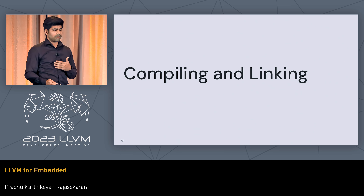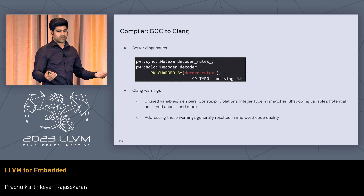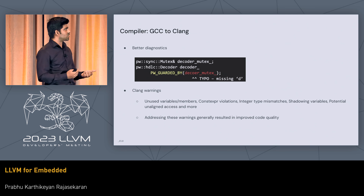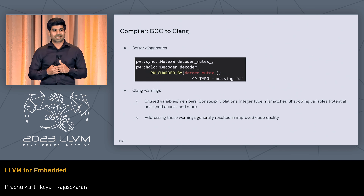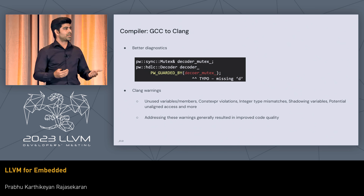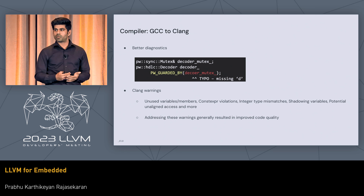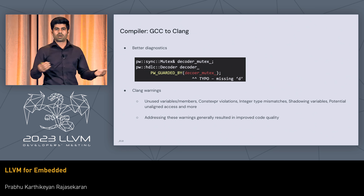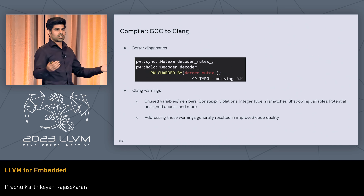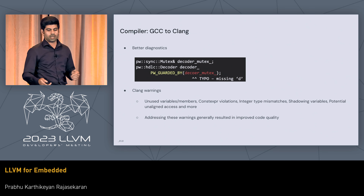Once we started switching out the compiler, the first things we noticed were better diagnostics. We were able to catch some bugs in the code, and the warnings Clang produced directly helped us improve code quality. These were low-controversy patches that we sent out, and everybody agreed that they just helped improve the product quality.